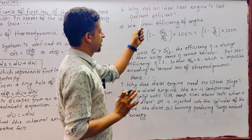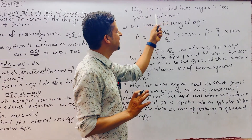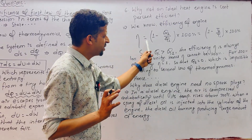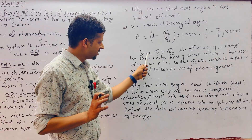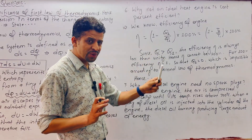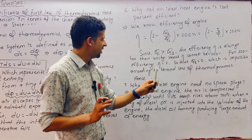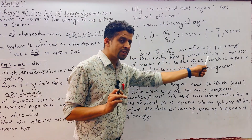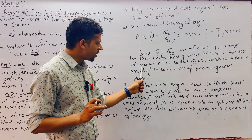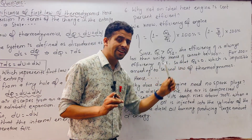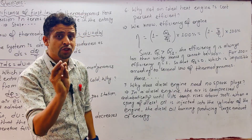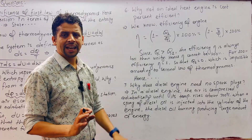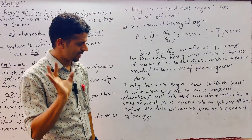Question 6: Why is no ideal heat engine 100% efficient? Since Q1 is always greater than Q2, efficiency is always less than unity. For 100% efficiency, Q2 would have to equal zero, which is impossible according to the second law of thermodynamics. Hence, an ideal engine cannot be 100% efficient.